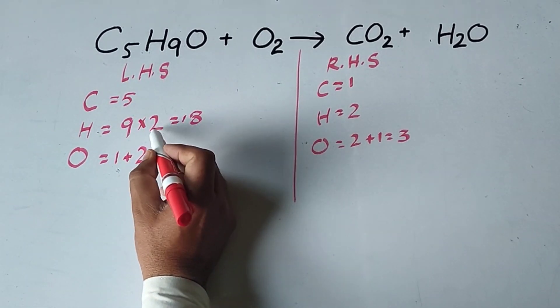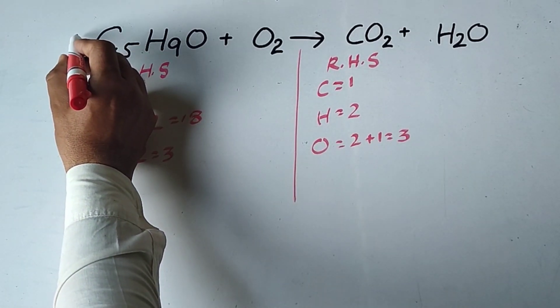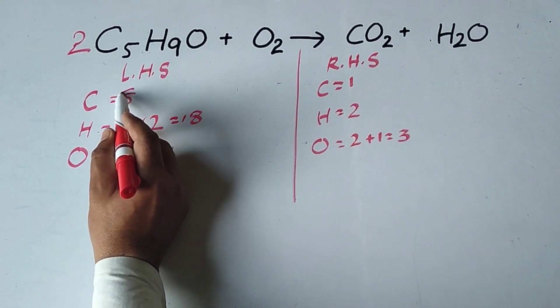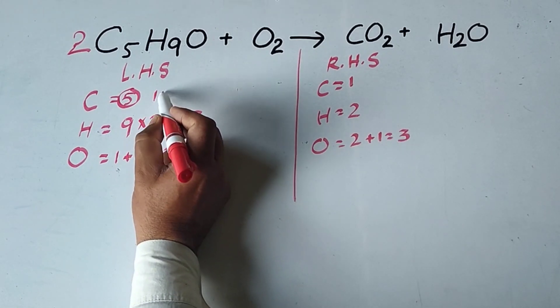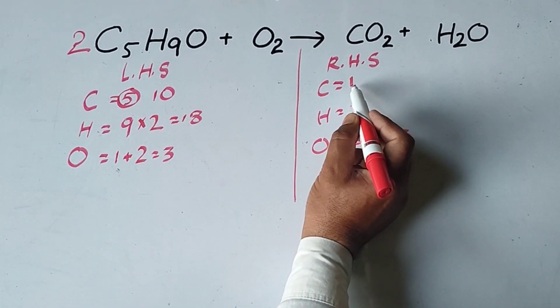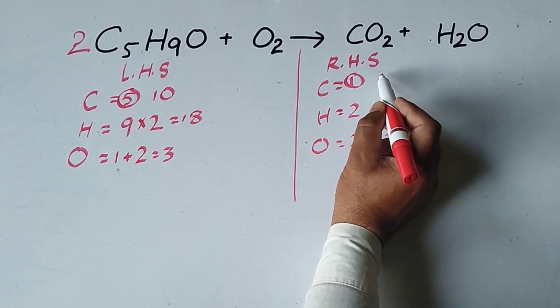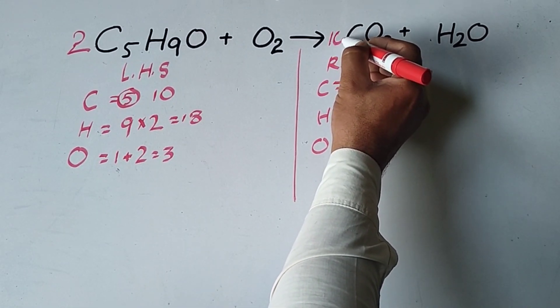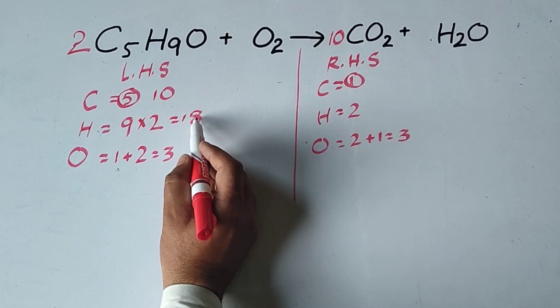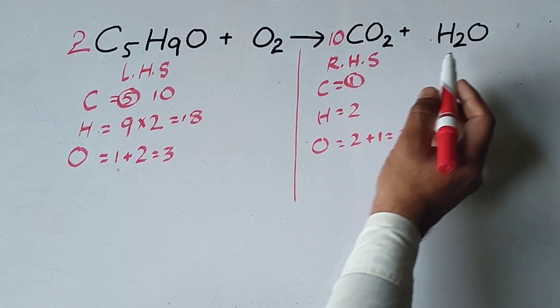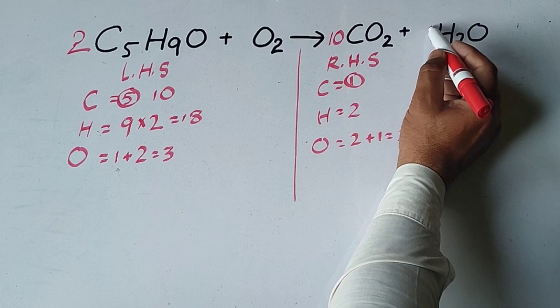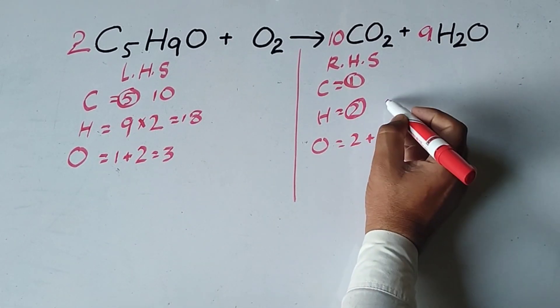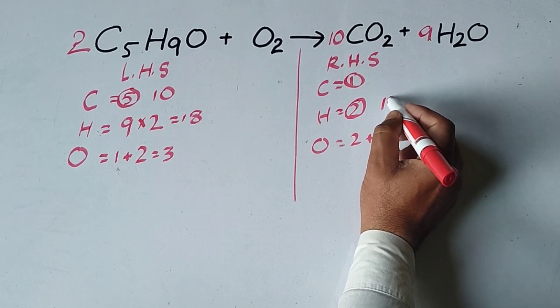We put coefficient 2 for C5H9O. Carbon atoms become 10. Now to balance the number of hydrogen atoms, 18 hydrogen on the left, 2 hydrogen per water. Here hydrogen coefficient can be 9. Hydrogen becomes 18.